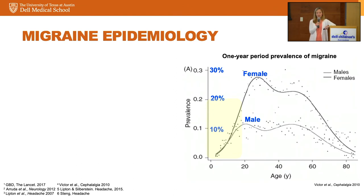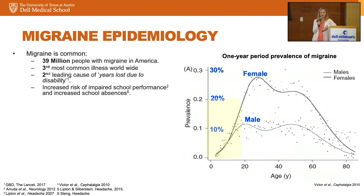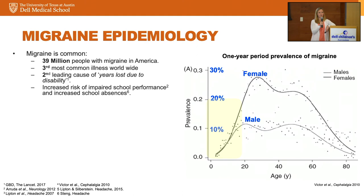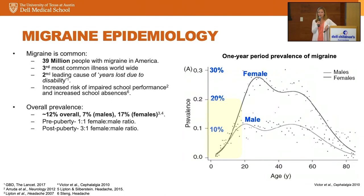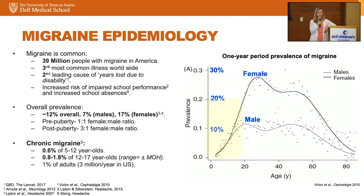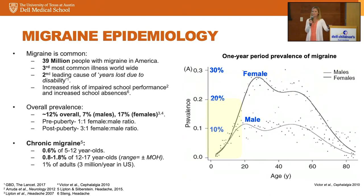Let's talk about migraine epidemiology. Migraine is incredibly common — about 39 million people in the United States have migraine. It is the third most common illness worldwide and the second leading cause of years lost due to disability. The overall prevalence is about 12%. After puberty it is much more common in females than males; before puberty it's about a one-to-one ratio. Chronic migraine affects about 1% of adults, 0.6% of kids ages 5-12, and 0.8 to 1.8% of adolescents ages 12-17. These kids' diagnoses exist and need to be identified and treated early.